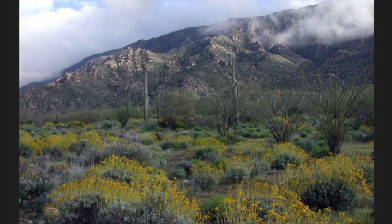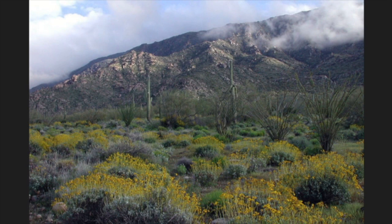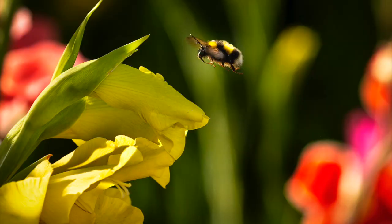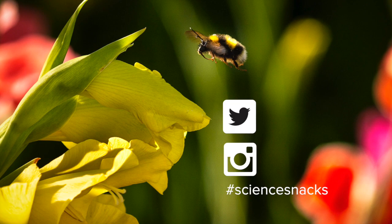So how can you and your families help to encourage pollinators and help us keep growing food? Keeping native bee-friendly plants around your house can help support their population, and it can also be really fun when you start to notice the types of bees that live all around you. What's something new you learned today about bumblebees? Can you name a food that we rely on bumblebee buzz pollination to produce? We hope you have learned something new about bees in this episode. Don't forget to tag us on Instagram or Twitter with your answers using the hashtag Science Snacks. Tune in next time for a new snack — until then, stay hungry!